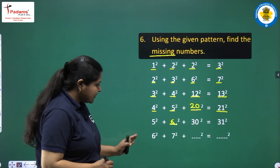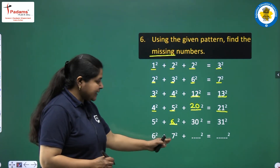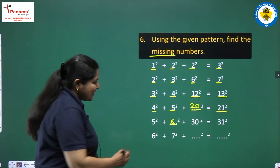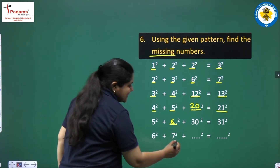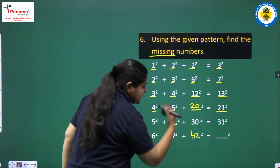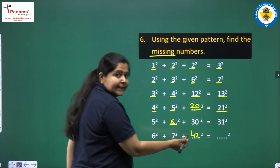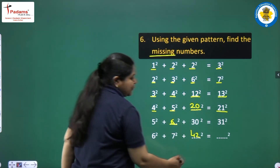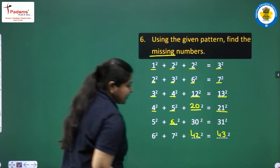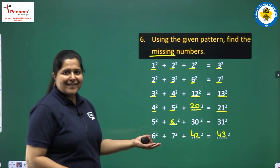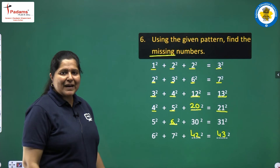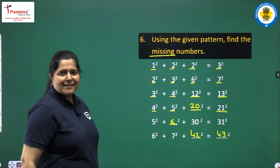Next: 6 squared plus 7 squared plus what? 6 times 7 is 42, so 42 squared goes here. And the number on the right will be 1 greater than 42, which is 43, so 43 squared. It is an interesting pattern and the answer is very simple.